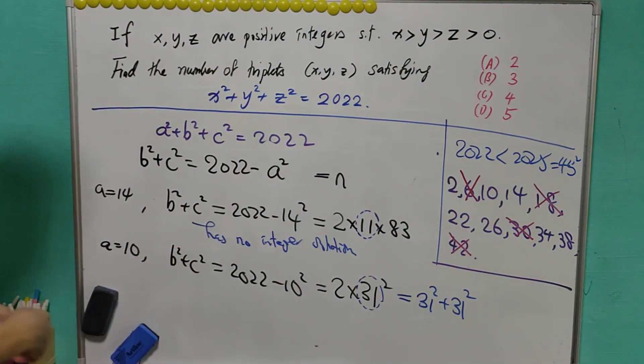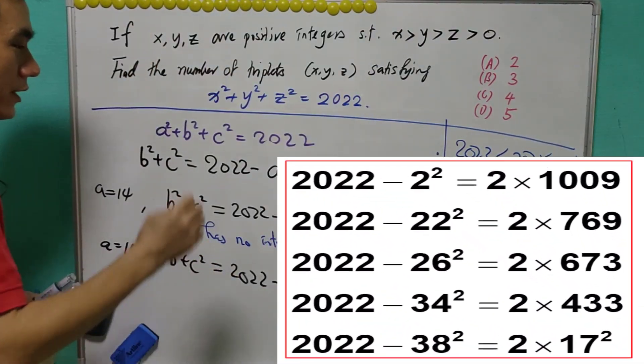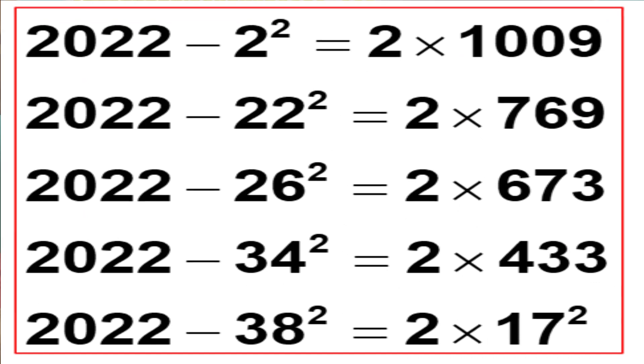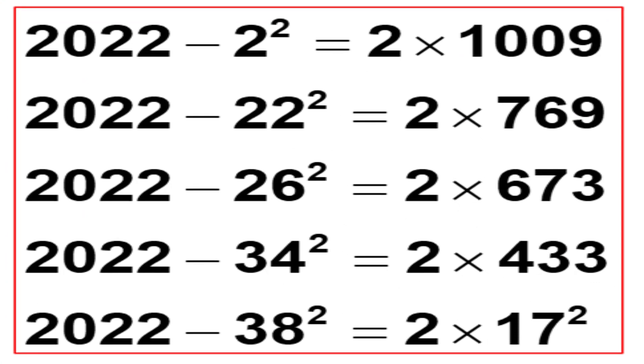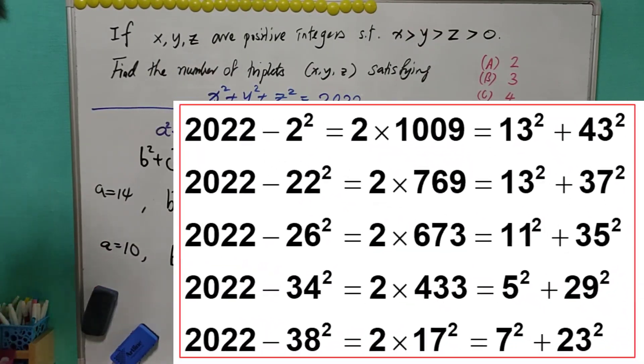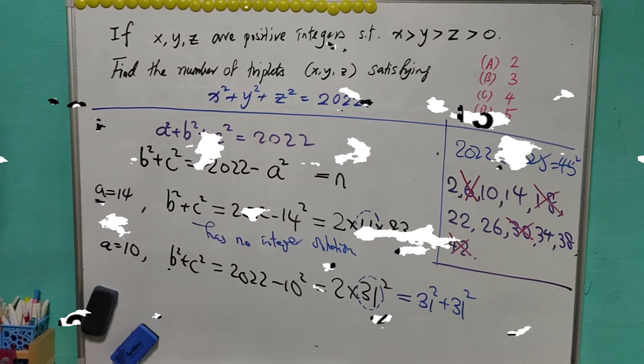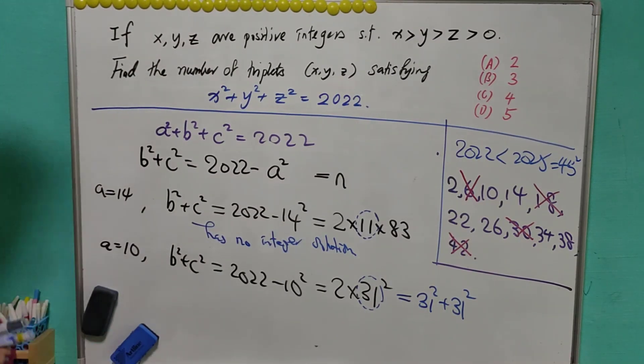And you can check for other value of a, none of the prime factorization contain a prime number of 4k plus 3. And with this, it means that each of them will have a solution. And in this case, we can check that it has a unique solution. And therefore, there are exactly five of such x, y, z.